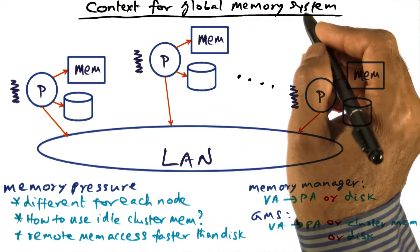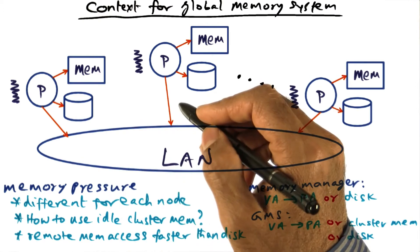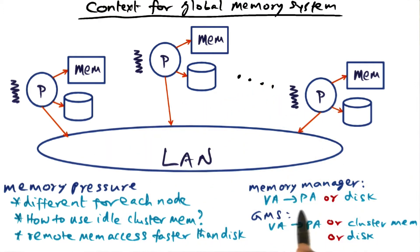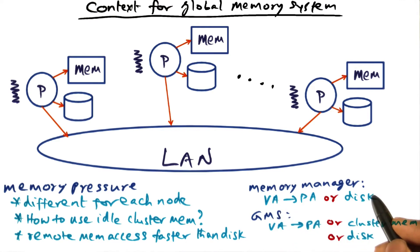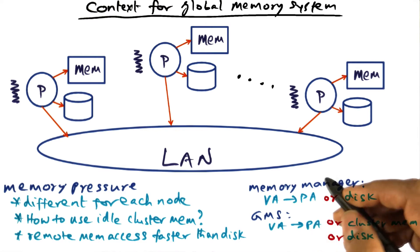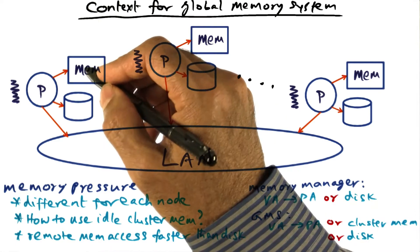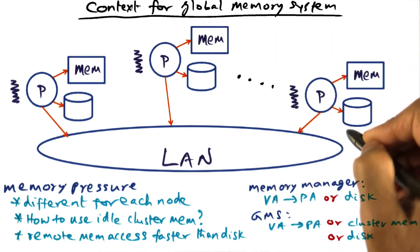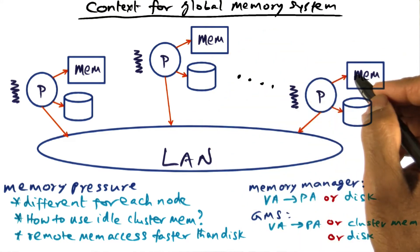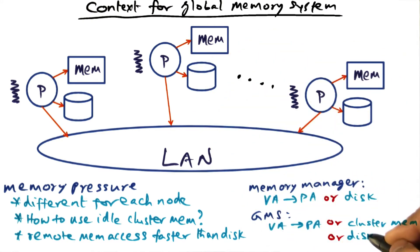The Global Memory System, or GMS for short, uses cluster memory for paging across the network. In normal memory management, if a virtual-address-to-physical-address translation fails, the memory manager finds that virtual address's page on the disk and pages it in. In GMS, if there is a page fault — that is, the translation fails — meaning the page is not in the physical memory of this node, GMS will check if the page might be in the cluster memory of one of the peer nodes, or on the disk if it is not in the cluster memory. GMS integrates cluster memory into the memory hierarchy.